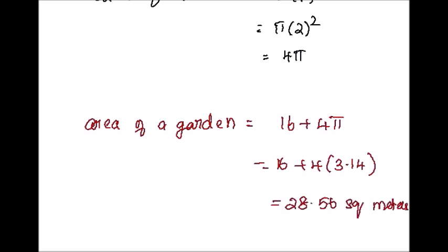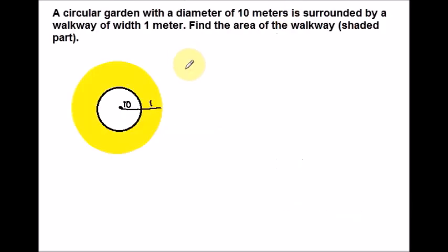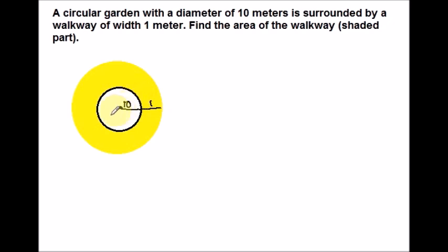Here is the next word problem. A circular garden with diameter 10 meters is surrounded by a walkway of width 1 meter. Find the area of the walkway only, the shaded part. The walkway is enclosed between a smaller circle of radius 5 meters and a larger circle of radius 6 meters, because 5 plus 1 equals 6 meters.